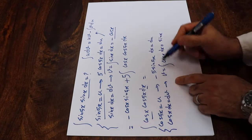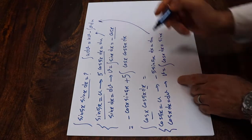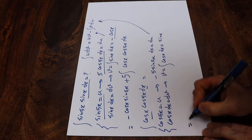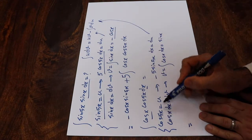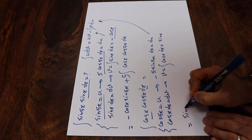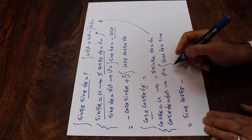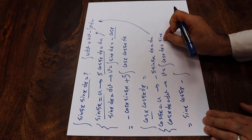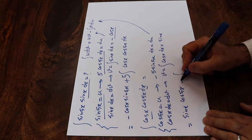So now you need to substitute these expressions into this formula. Therefore, this integral you can rewrite as uv — that is u times v — which will be sin x times cosine 5x, minus the integral of v du.